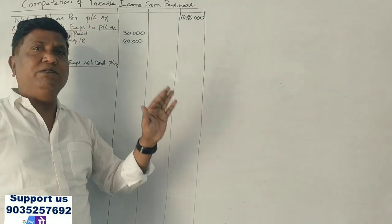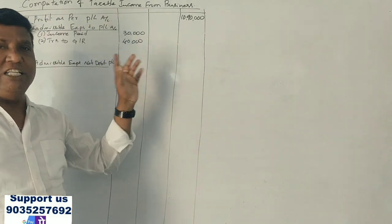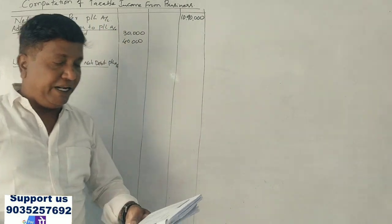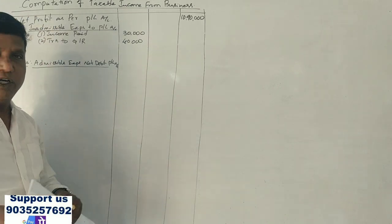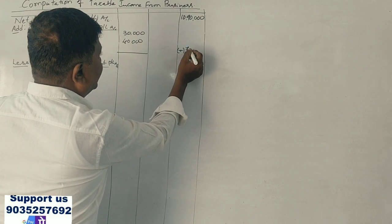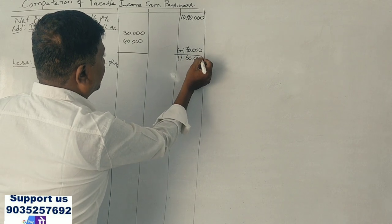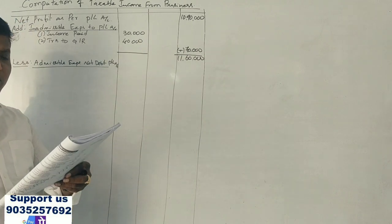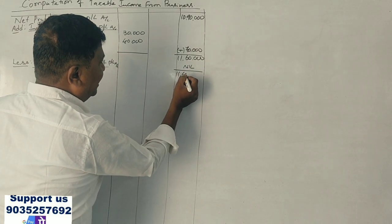This is the loss of subsidiary company. As per tax provisions, a loss from a subsidiary company is not an allowable deduction.